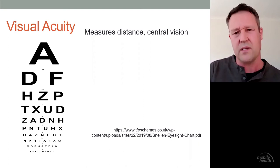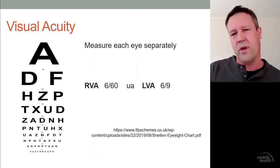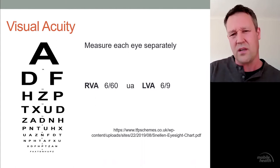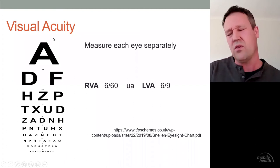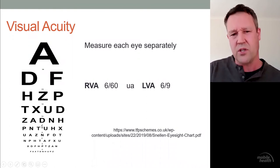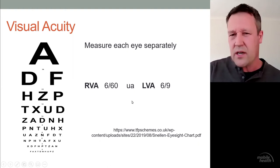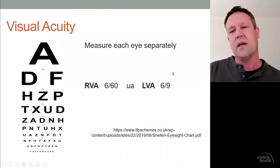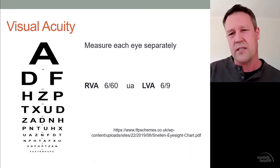A really important point when checking visual acuity is that you need to check each eye separately — the RVA (right visual acuity) and LVA (left visual acuity). In this example, the right eye has 6/60 vision, which is the top letter and quite poor, while the left visual acuity is much better at 6/9, almost perfect. If you check both eyes together, the person would give you around 6/9 and you'd miss the problem with the right eye. So always check each eye separately, covering the other eye with a hand, a card, or a piece of paper.